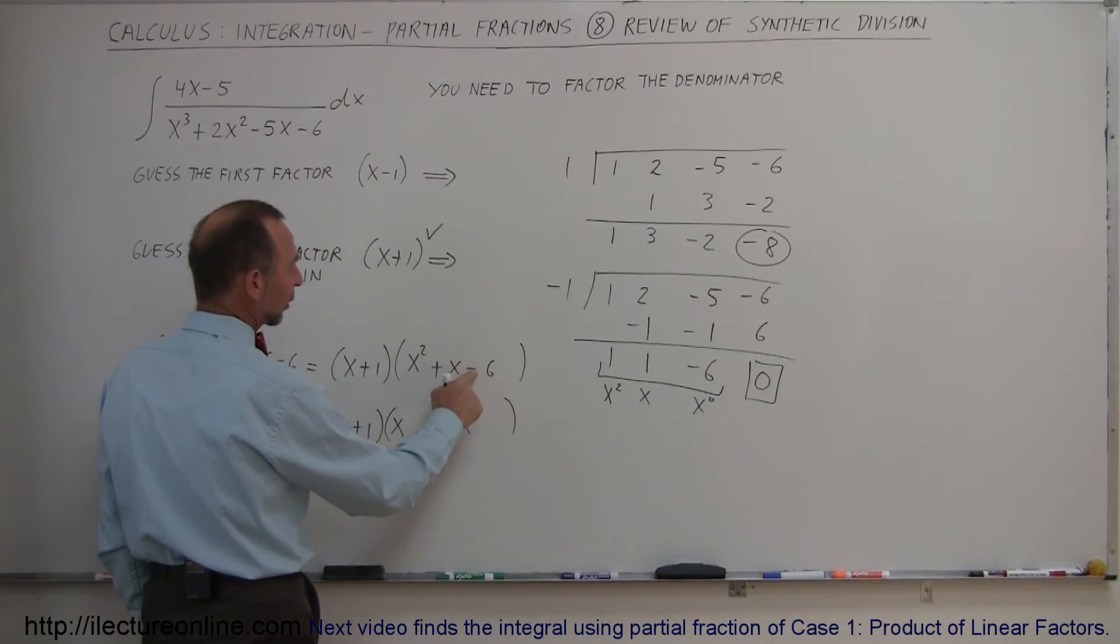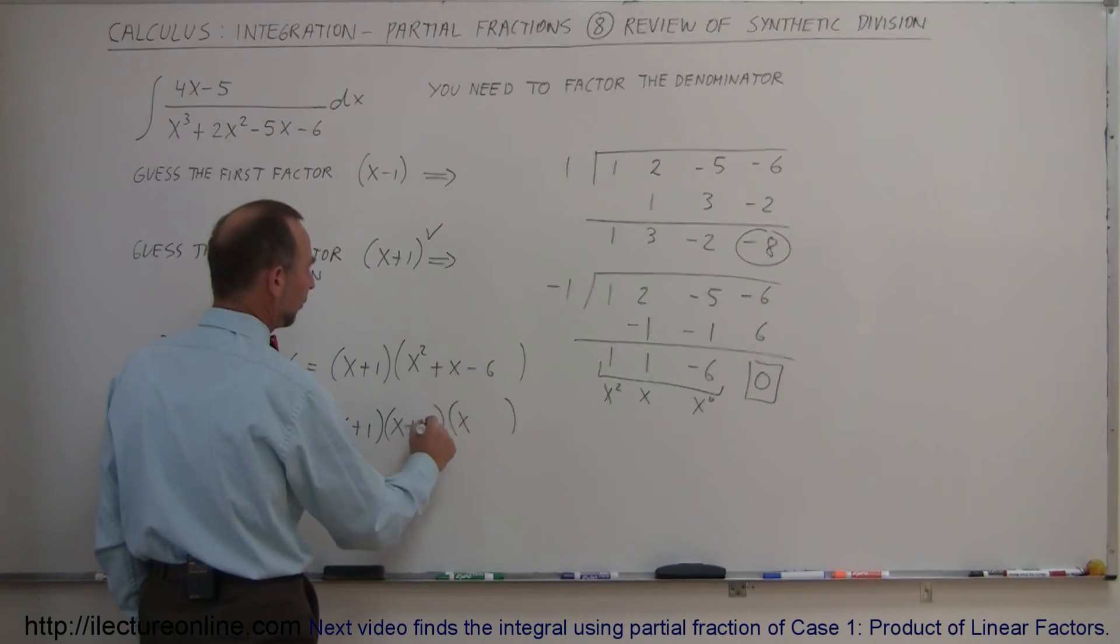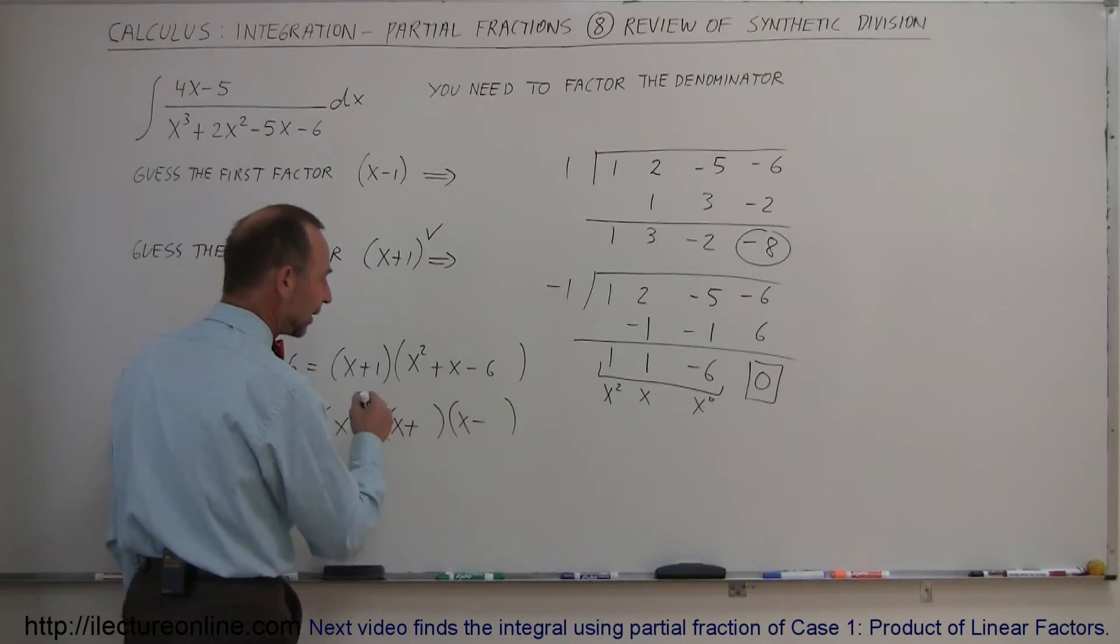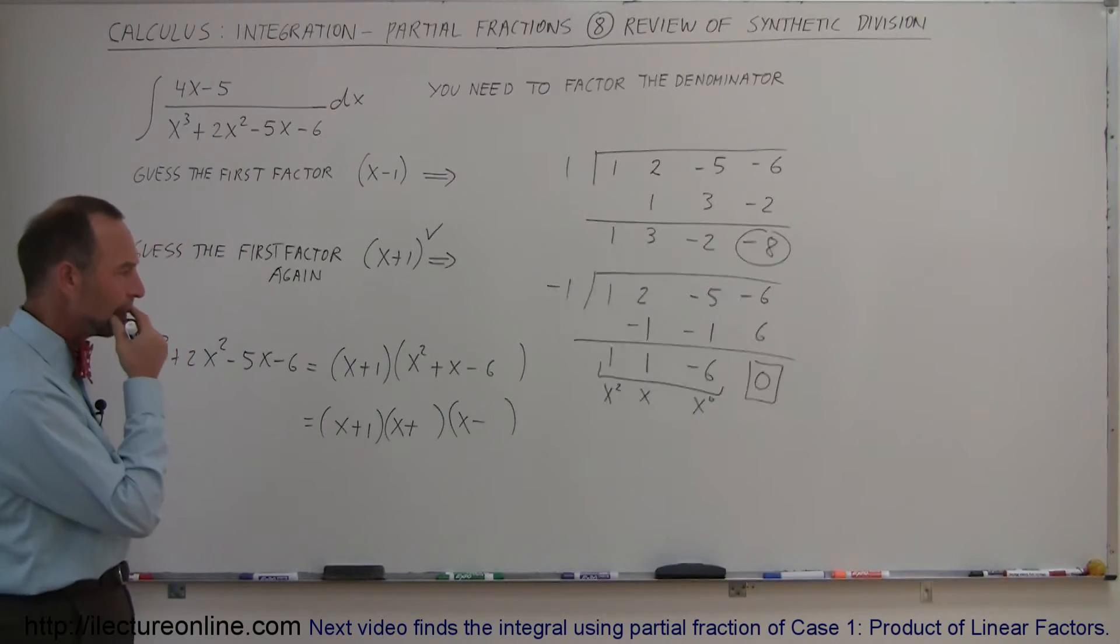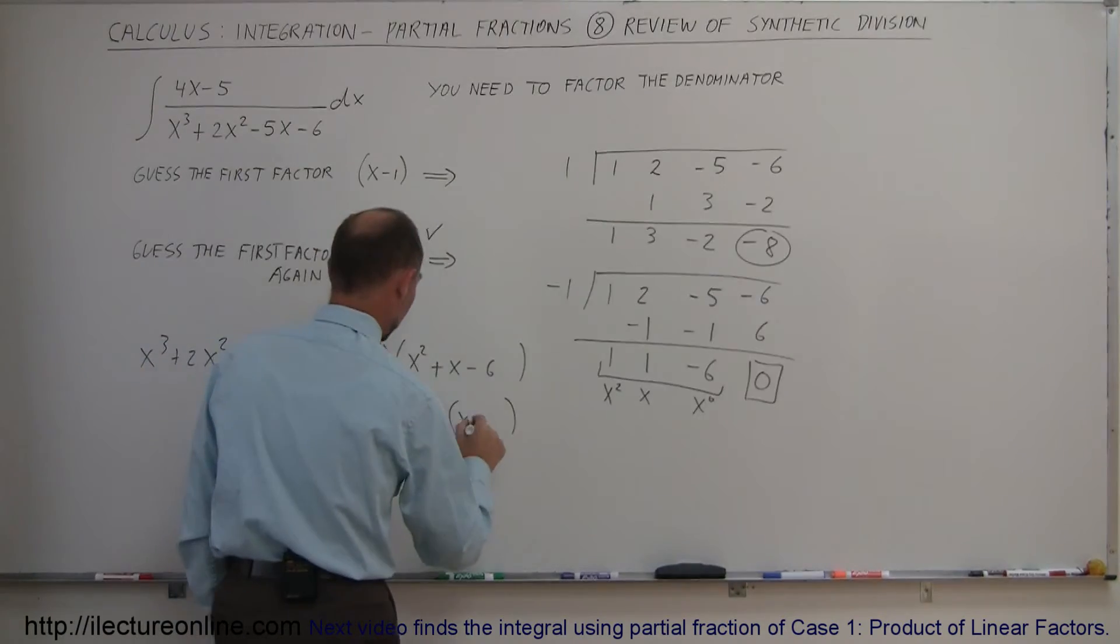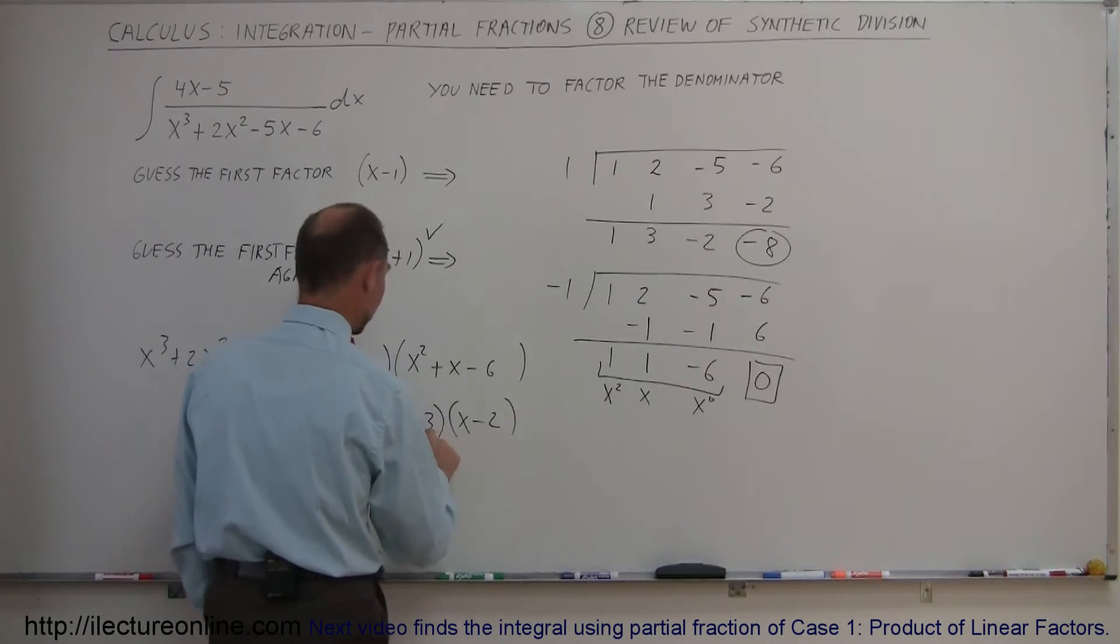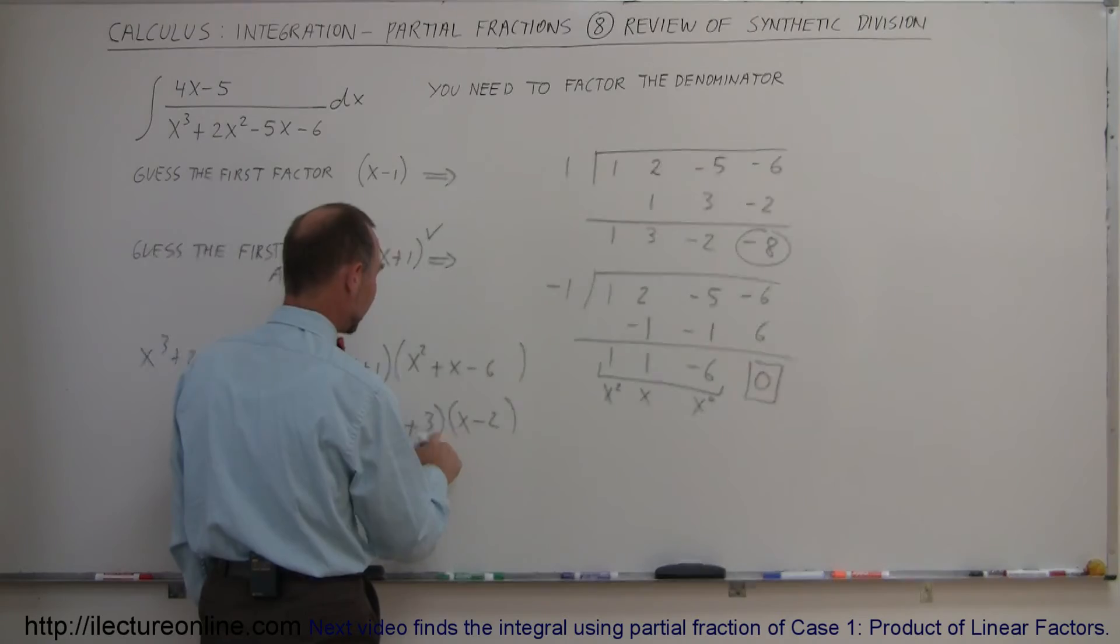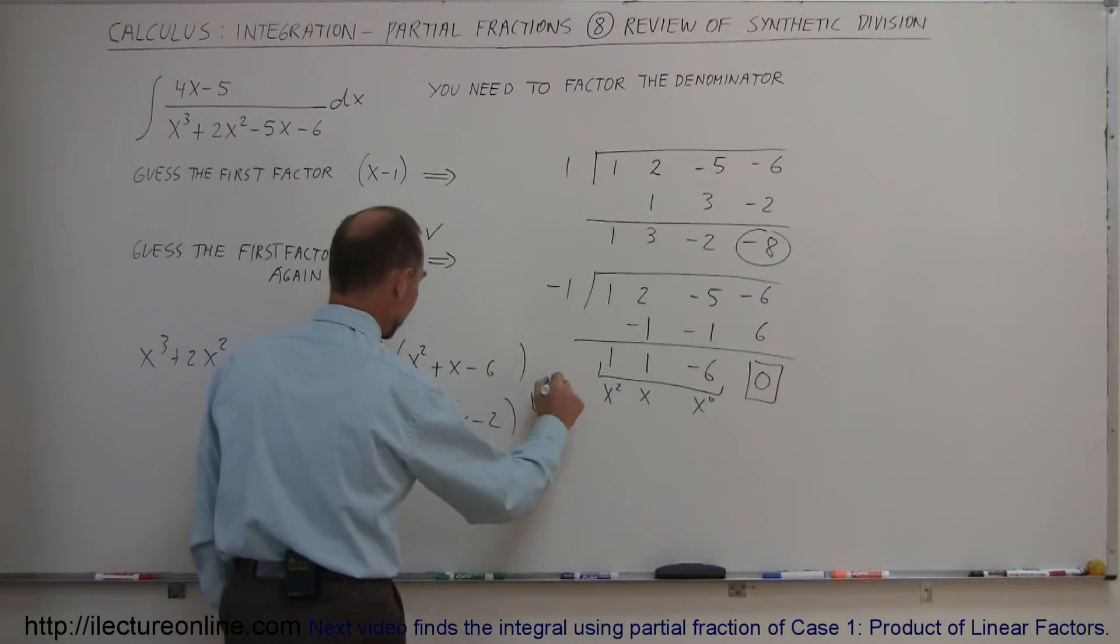Looking at the signs, it looks like one has to be positive, one has to be negative. When I multiply, I get minus 6. When I add them, I get plus 1. How about plus 3 and minus 2 might work. So minus 2 and plus 3, because if I add them together, I get plus 1. If I multiply them together, I get minus 6. There we go.